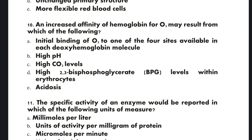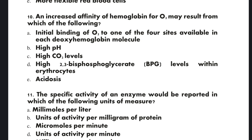Question 10: An increased affinity of hemoglobin for O2 may result from which of the following? A: initial binding of oxygen to one of the four sites available in each deoxy hemoglobin molecule, B: high pH, C: high CO2 level, D: high 2,3-bisphosphoglycerate level within erythrocytes, E: acidosis. The correct option is A: initial binding of O2 to one of the four sites available in each deoxy hemoglobin molecule.